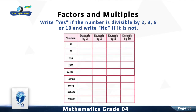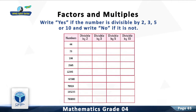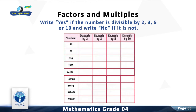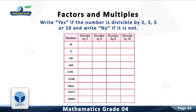Write Yes if the number is divisible by 2, 3, 5, or 10, and write No if it is not. Question 1: Check the divisibility of 44 by 2, 3, 5, and 10.